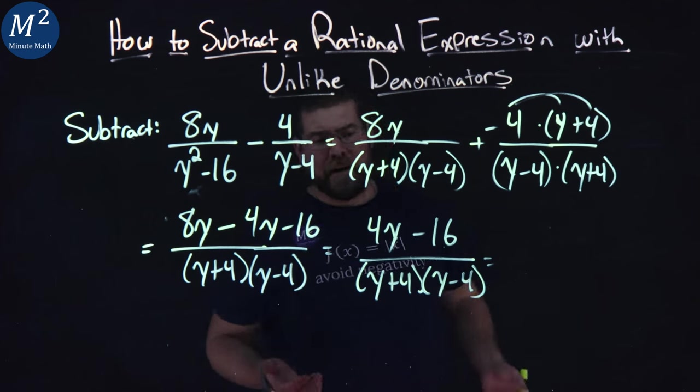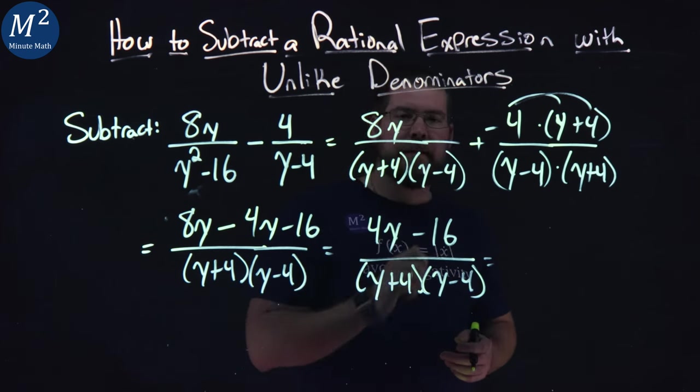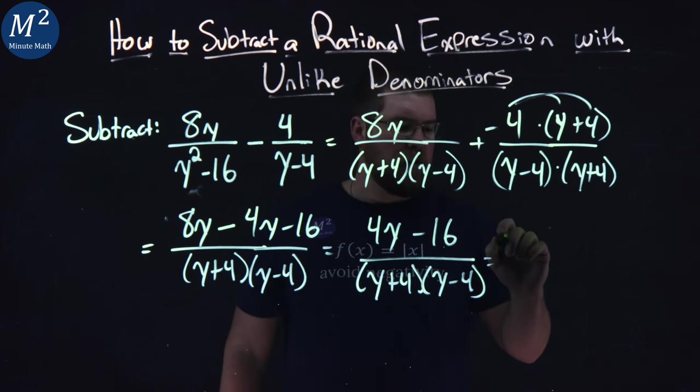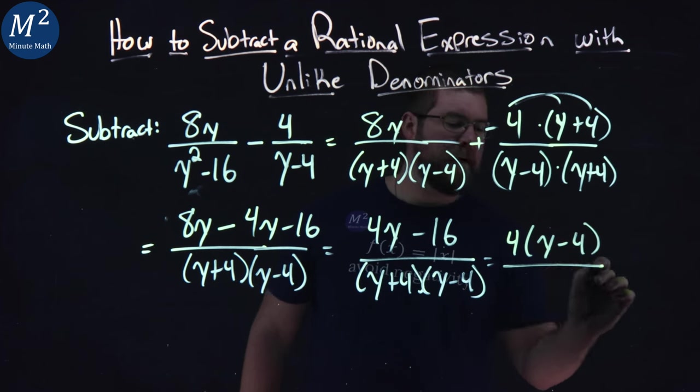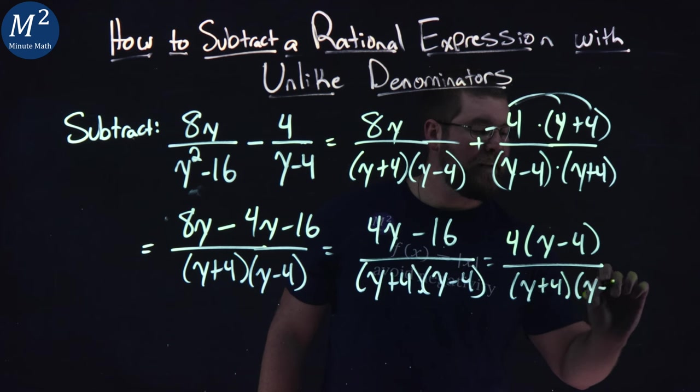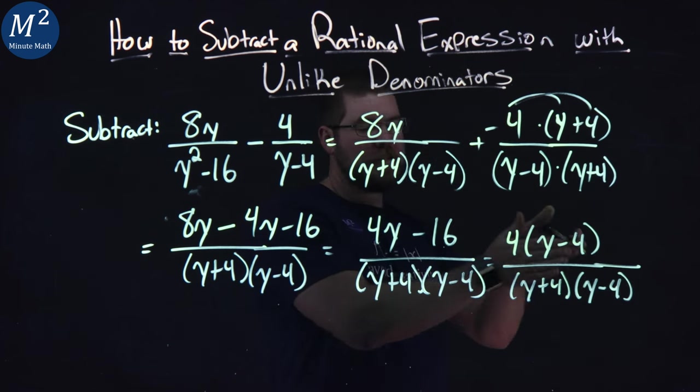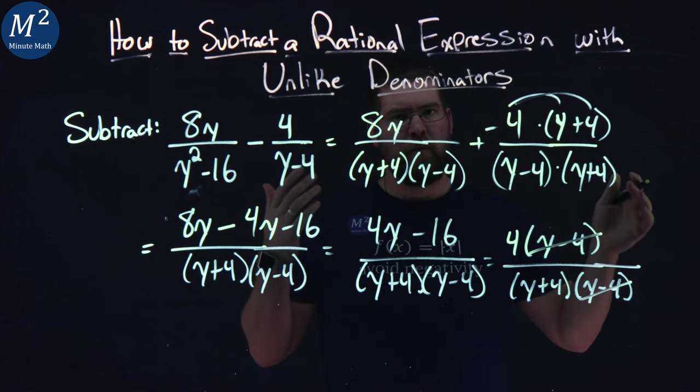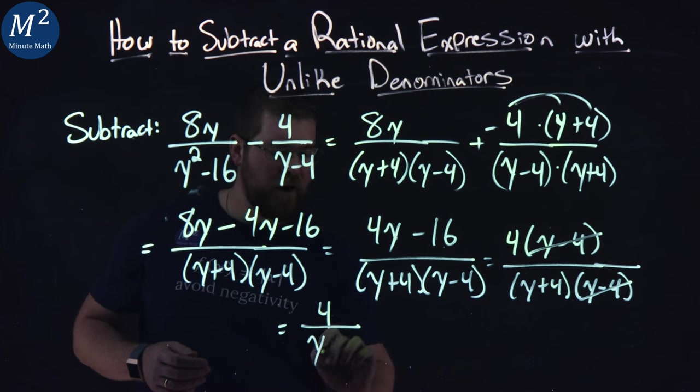Now we can keep simplifying - it's a long process. 4y minus 16, I'm going to pull out a 4 from both numbers. Pull out a 4, I'm left with y minus 4. I have y plus 4 here and y minus 4 in the denominator. Y minus 4s cancel - that's beautiful! What am I left with? 4 over y plus 4. But wait...